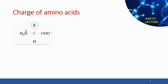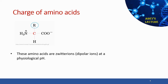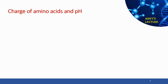At physiological pH of 7.4, amino acids without ionizable side chains are known as dipolar ions or zwitterions because they have both positively charged and negatively charged groups, giving them a net charge of 0. The pH of the solution affects the charge of amino acids or peptides, so increasing or decreasing the pH from 7.4 will affect the overall charge of the molecules.